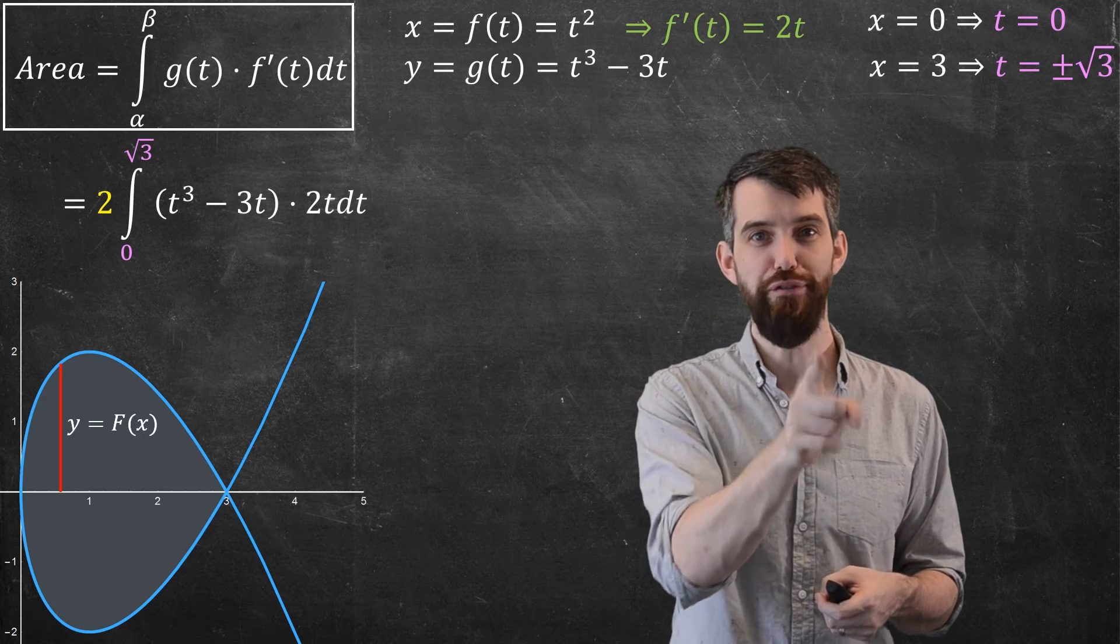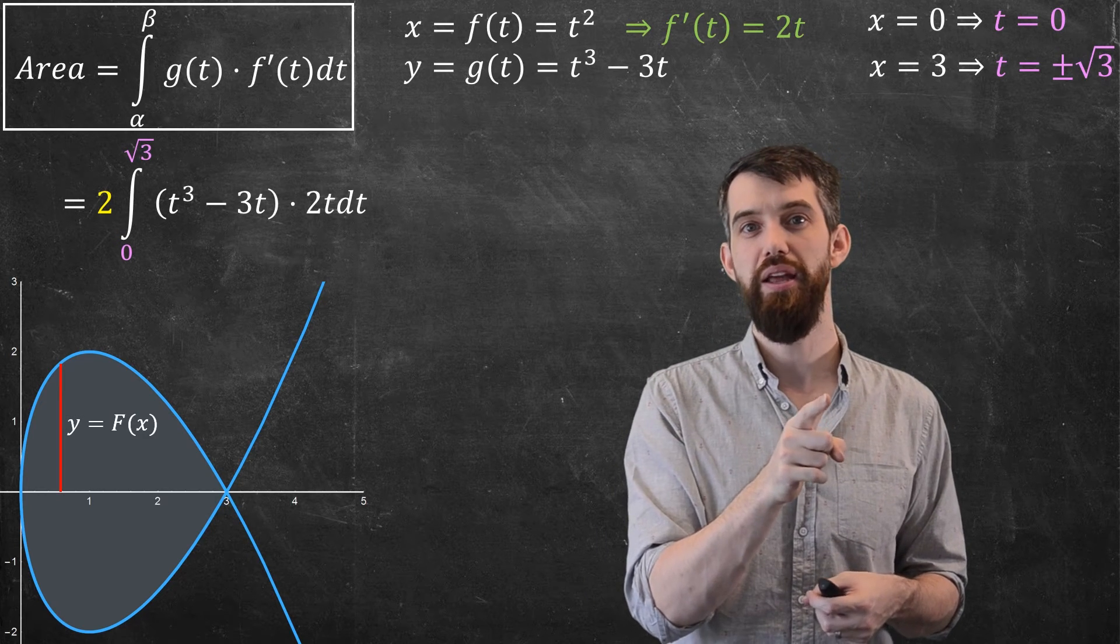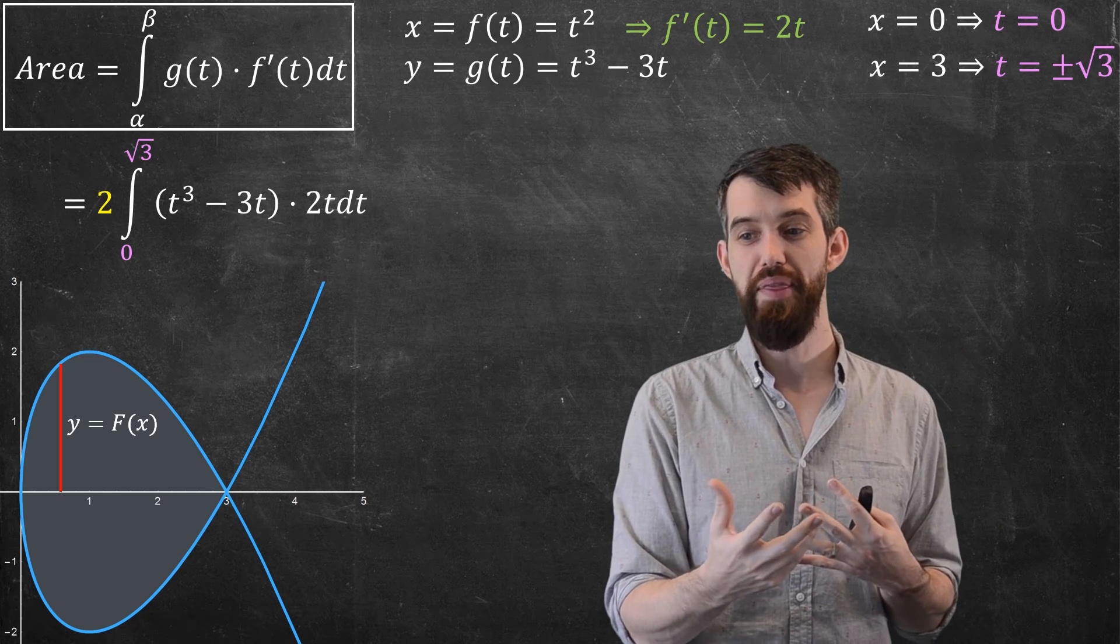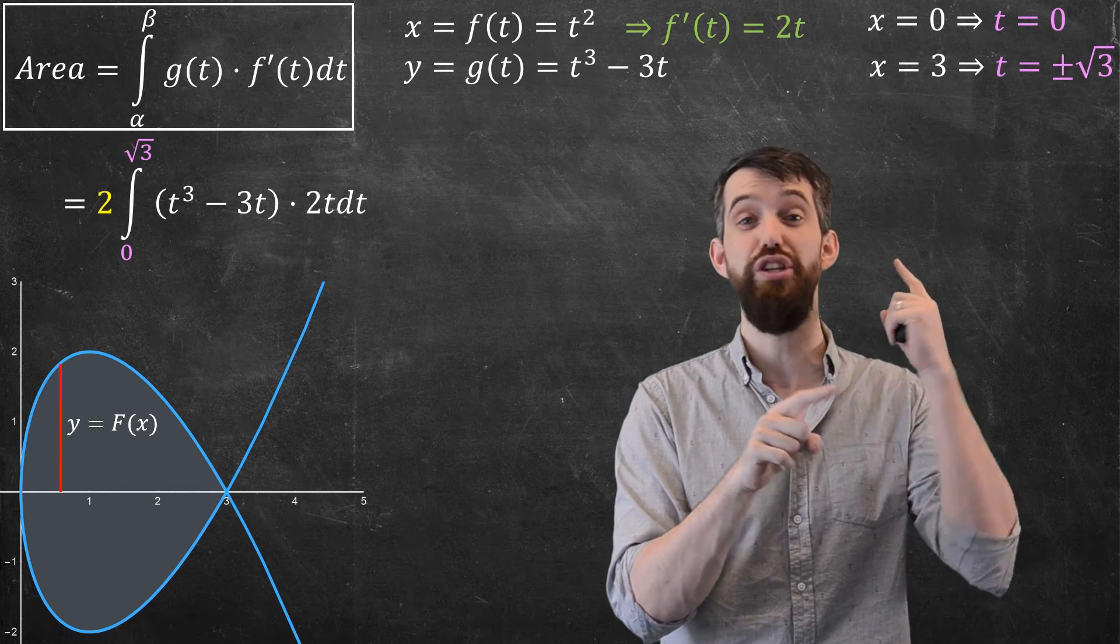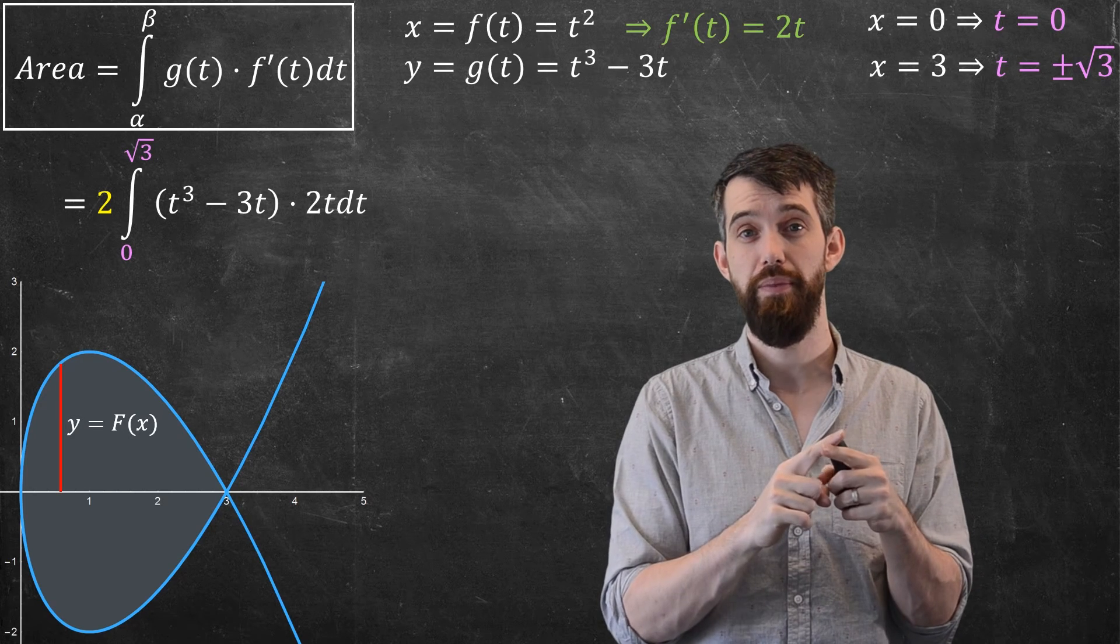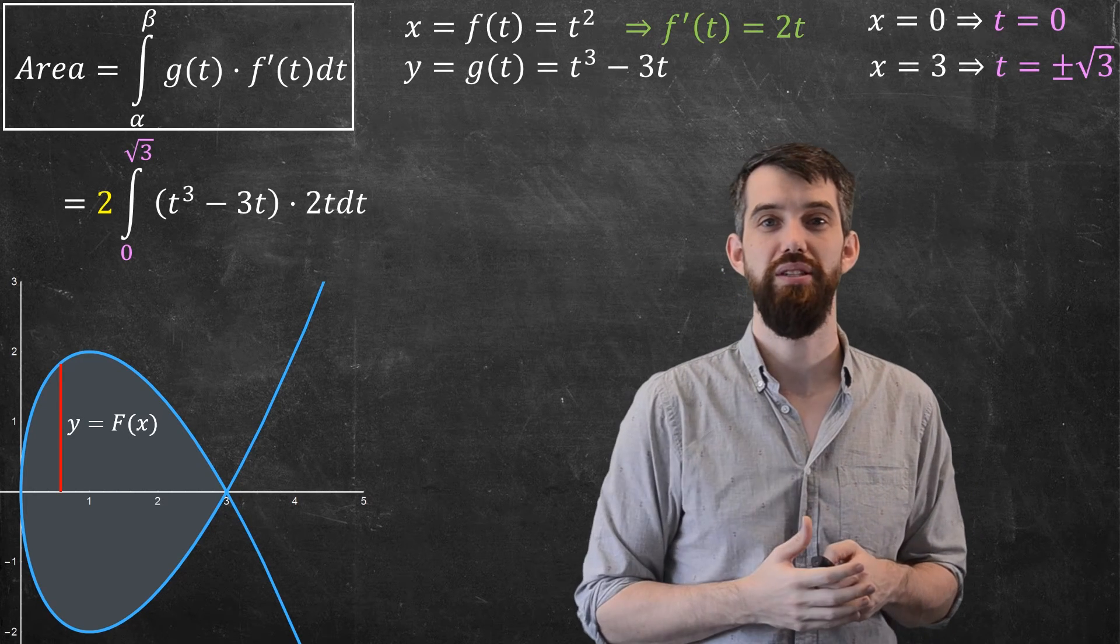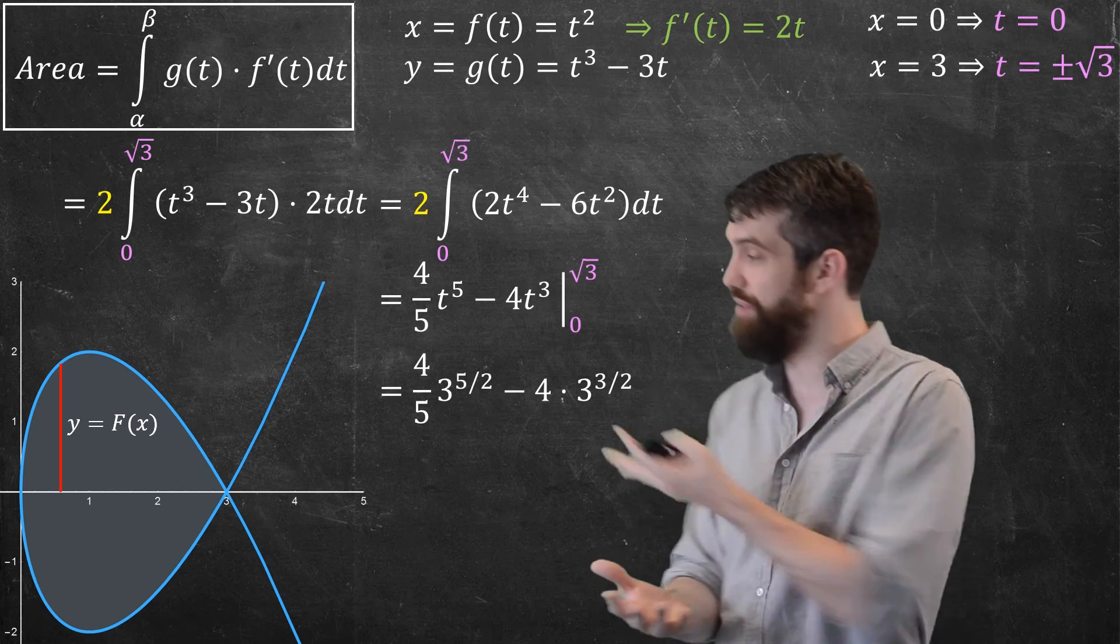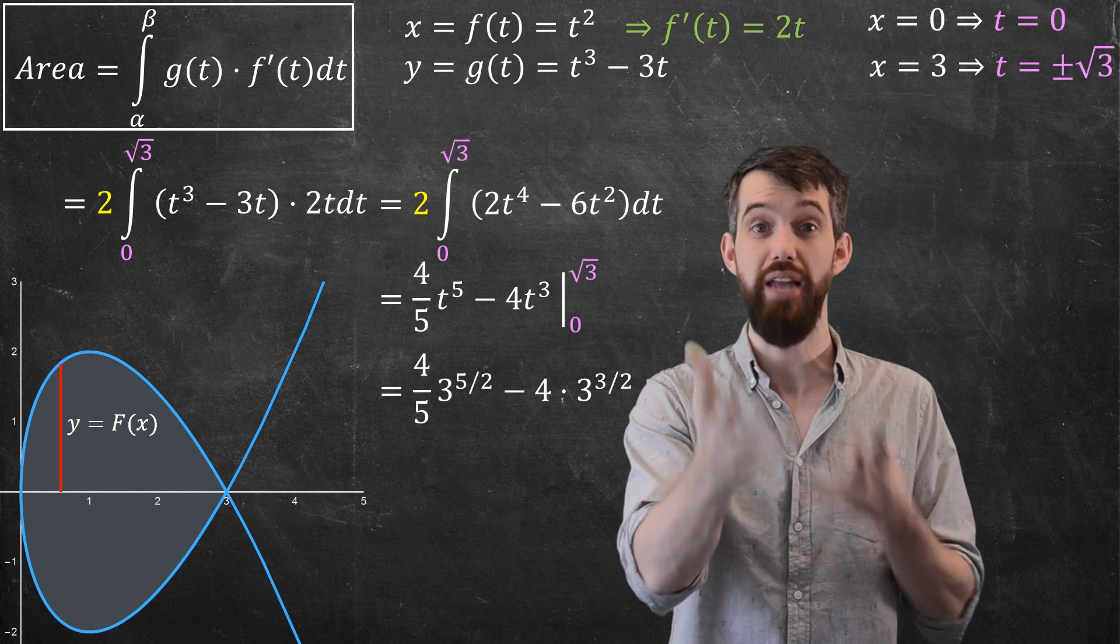So what do I have? I have that 2 out the front, because I'm just doing the top half, then the integral from 0 up to positive square root of 3, and then I put in my g of t, and I multiply my g of t by my f prime of t. And, well, this is just some particular integral. I can go off and compute it, and what do I get? Just whatever this thing is, doesn't really matter. It's a definite integral.